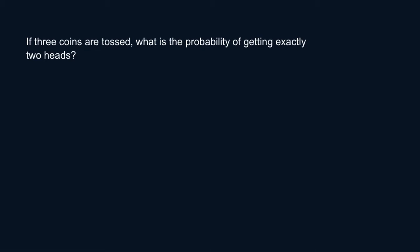When you toss three coins at the same time, how many combinations do you actually have? You can have a head for the first coin, another for the second coin, and another for the third coin. Let me use a yellow color to start listing the total number of outcomes.